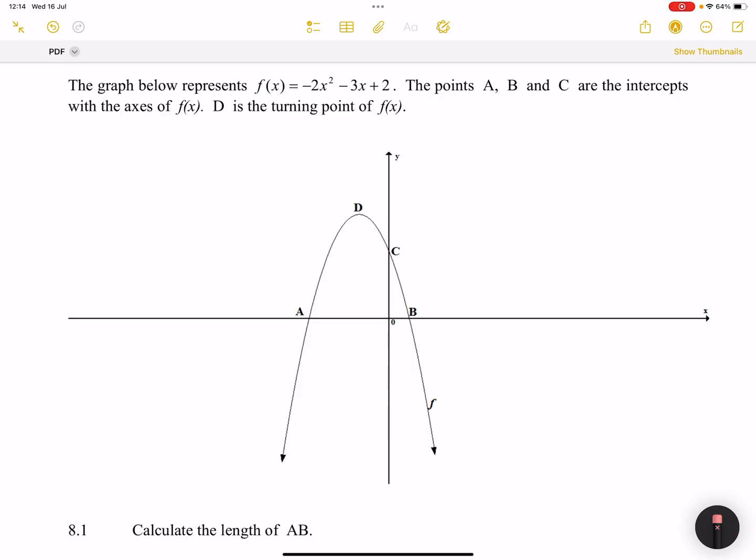So for x-intercepts we're going to say f(x) is equal to 0, so that's going to be -2x² - 3x + 2, this is equal to 0. I'm going to multiply everything by negative, so that it changes sign, 2x² + 3x - 2, and this is equal to 0.